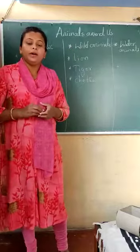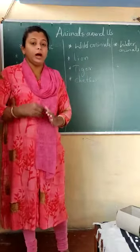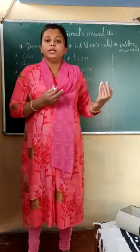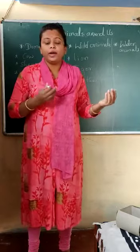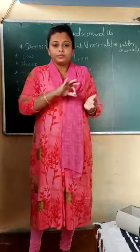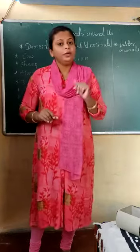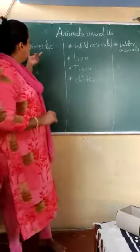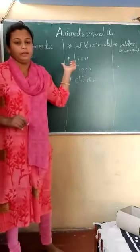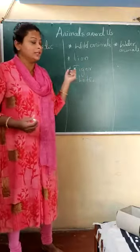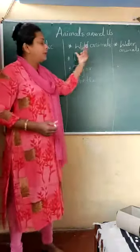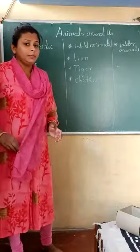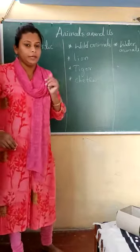Animals grow and they need shelter for themselves. We can divide animals into different types depending upon how those animals are useful for us, or how they live and follow their own lifestyle. We have three types: the first one is domestic animals, the second is wild animals, and the third is water animals.